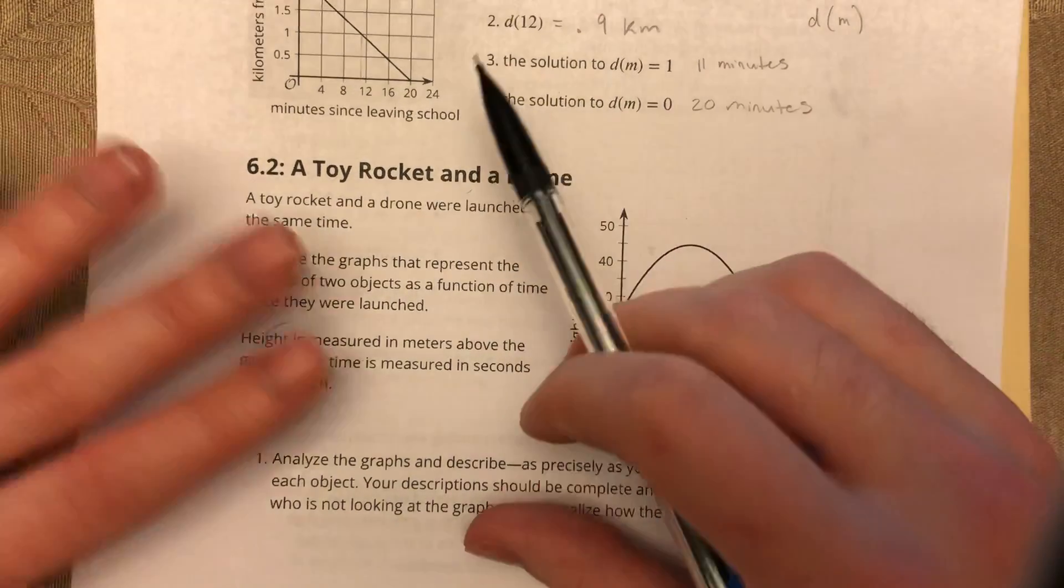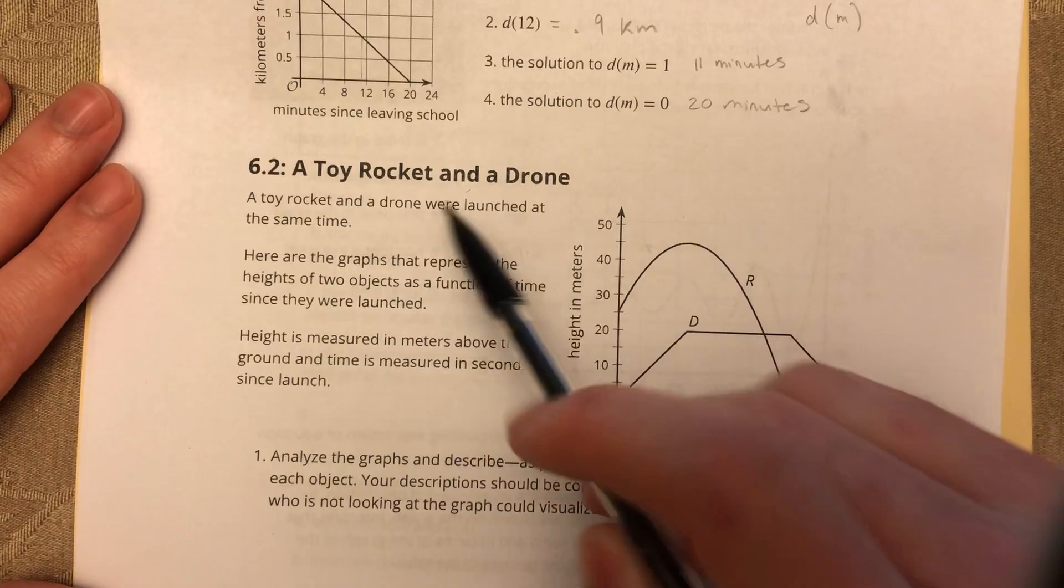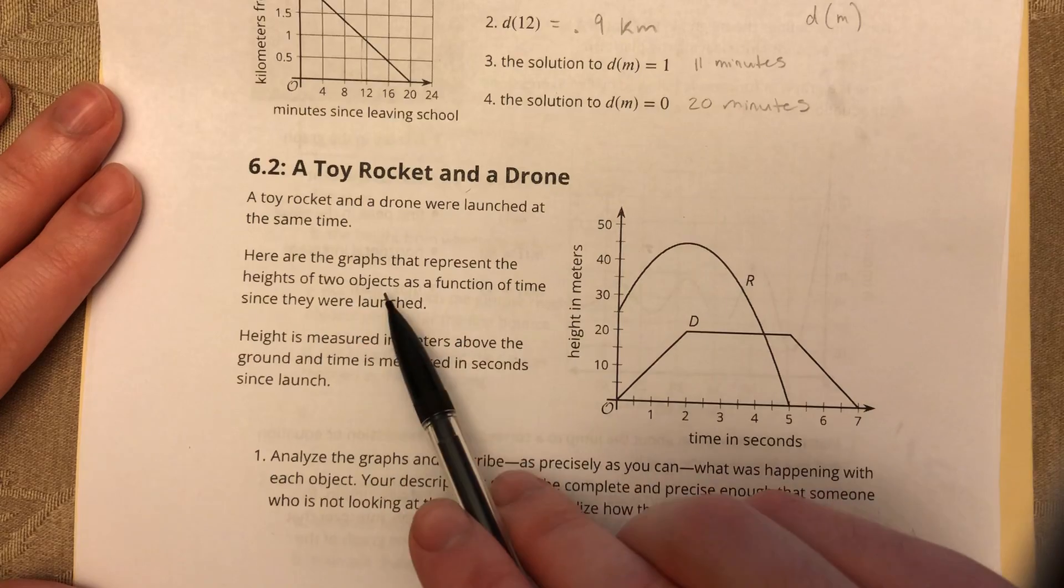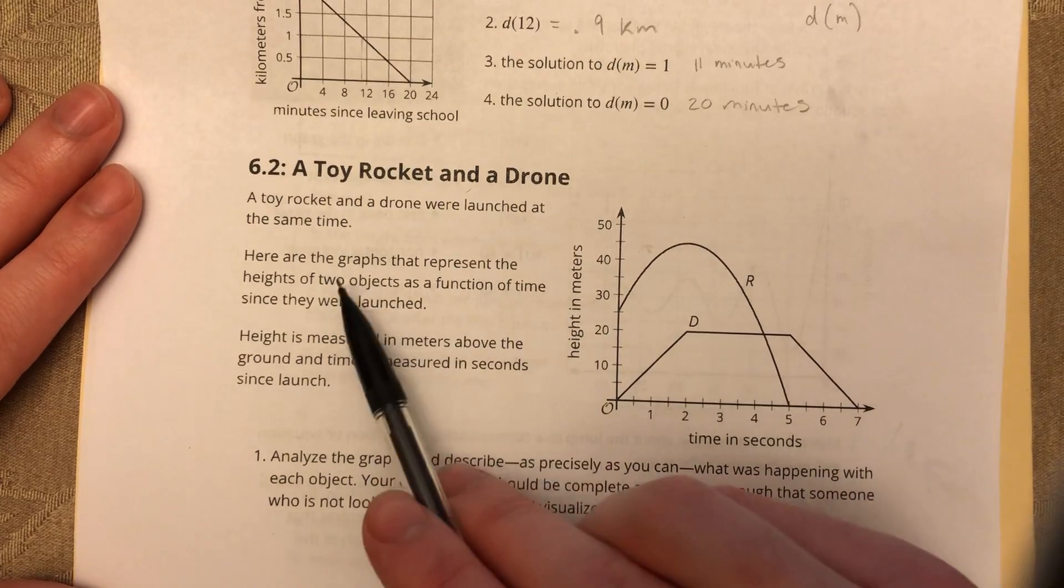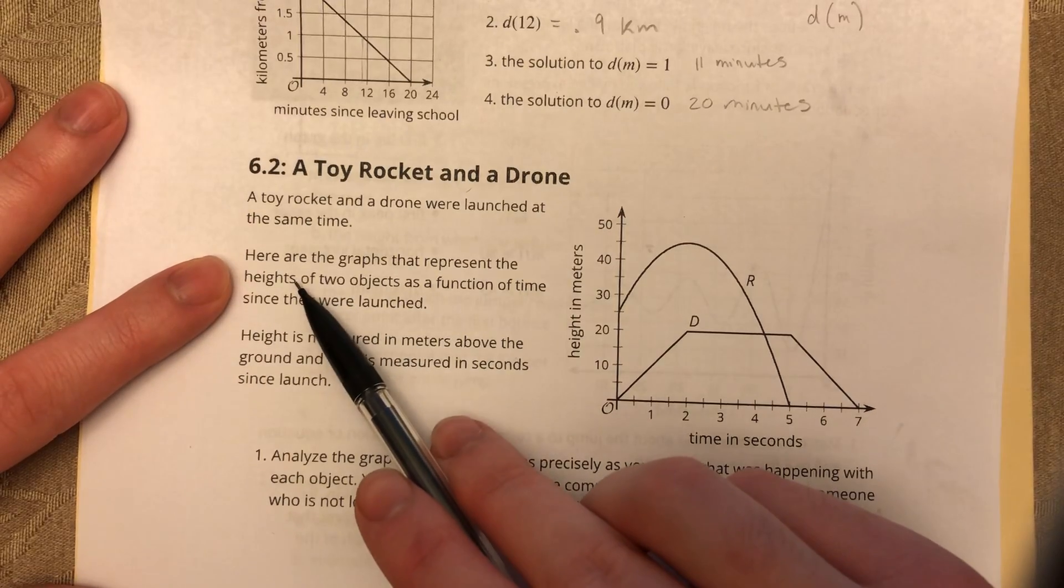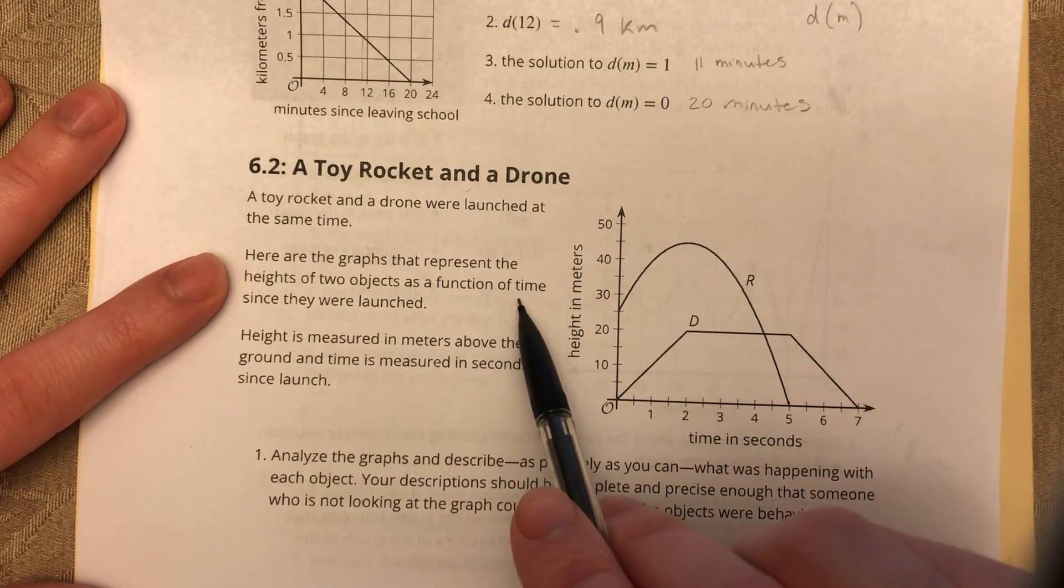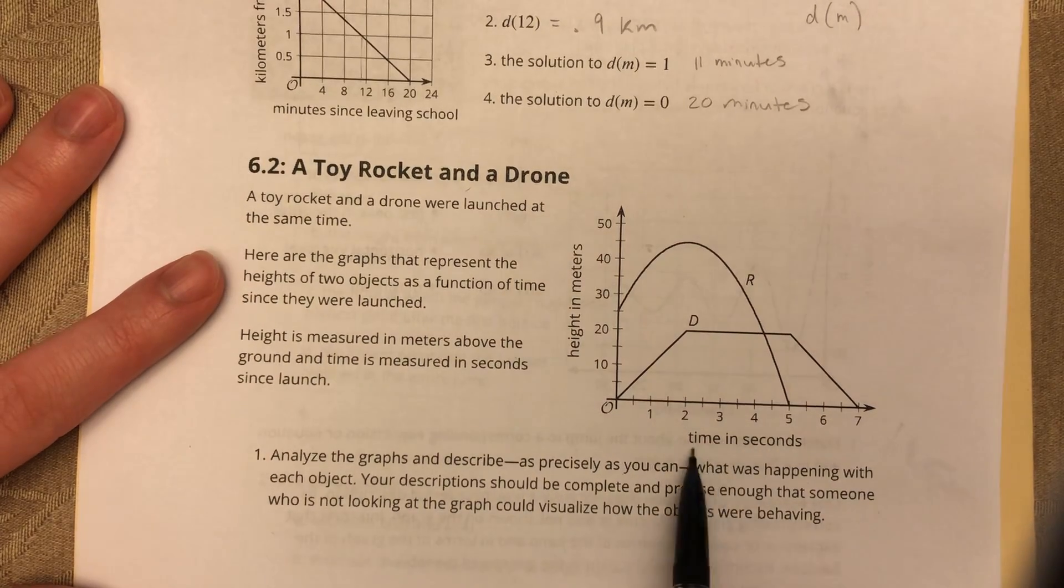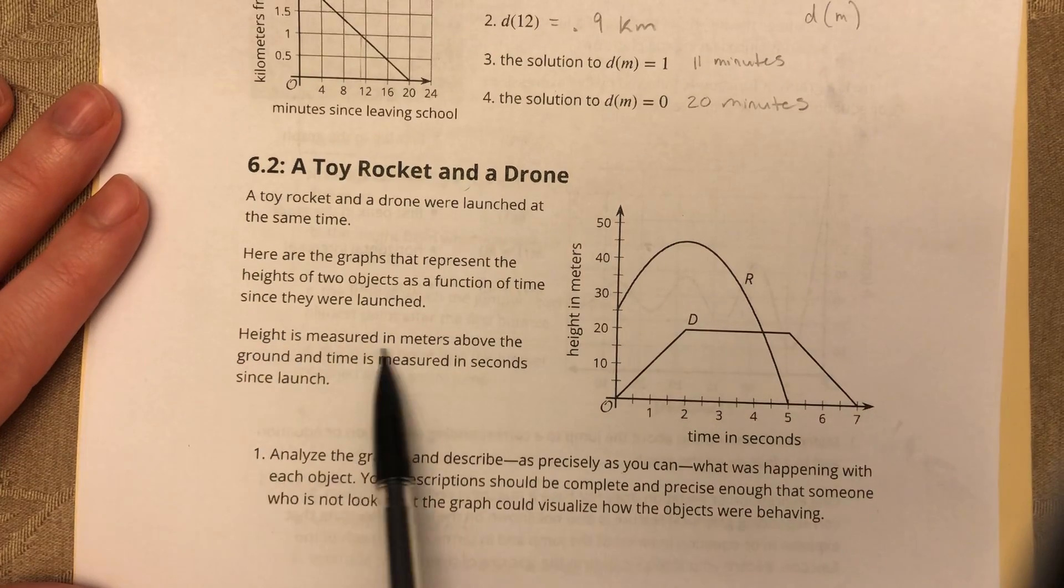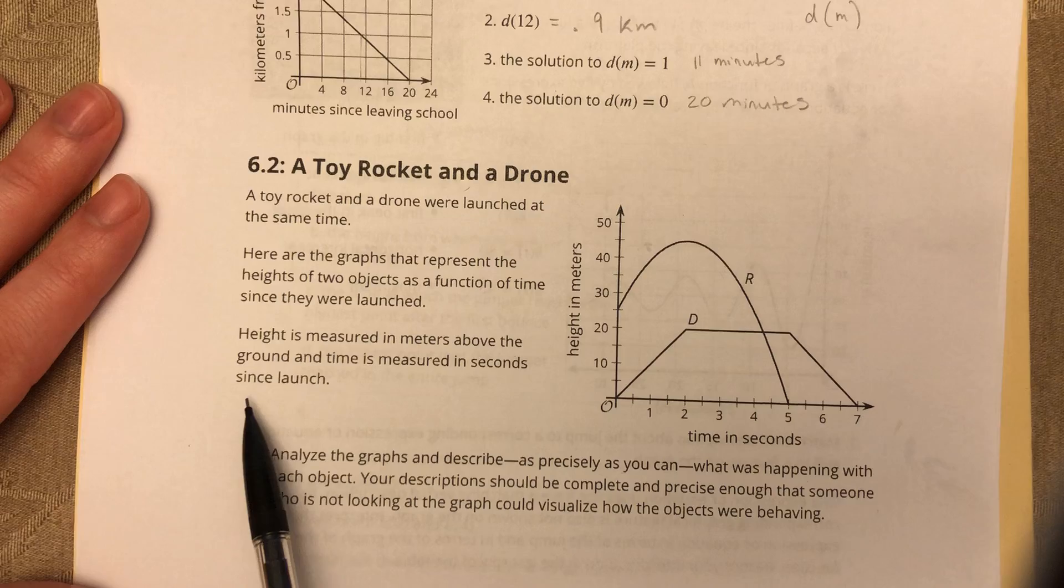Alright, 6.2: A Toy Rocket and a Drone. A toy rocket and a drone were launched at the same time. Here are the graphs that represent the height of two objects as a function of time since they were launched. What they're trying to say here is that the height is the dependent variable that depends on this independent variable time. We can see that time is on the x-axis and height is on the y-axis. Height is measured in meters above ground and time is measured in seconds since launch.